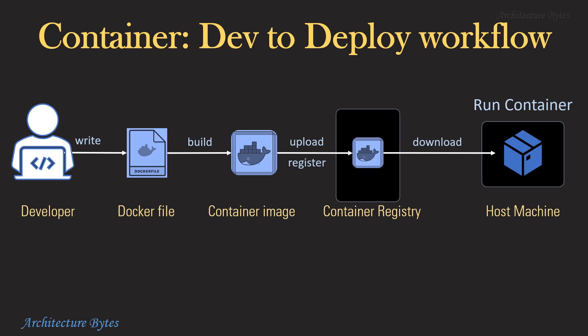Here is a typical container development to deployment workflow. Once a developer is done creating his application, he writes a Dockerfile which contains information about his application code and dependencies. Then he runs a docker build command to create a container image. The container image contains all the application code and dependencies. This image is uploaded to a container registry. When you need to run this container, you download it from the container registry onto a host machine and run it.